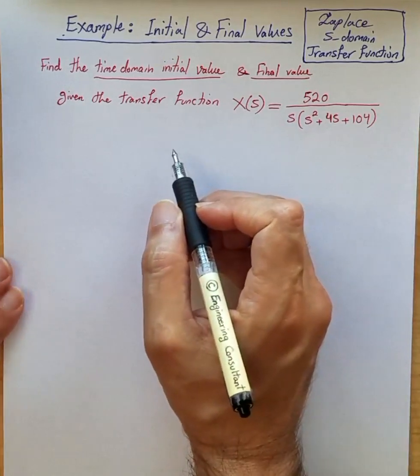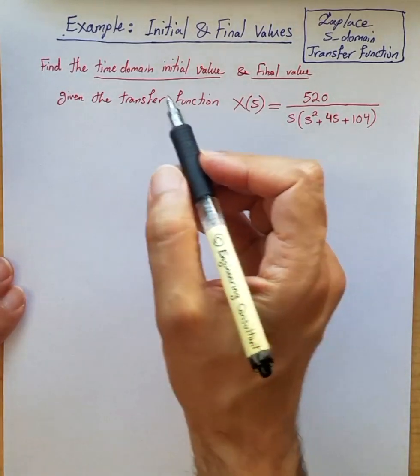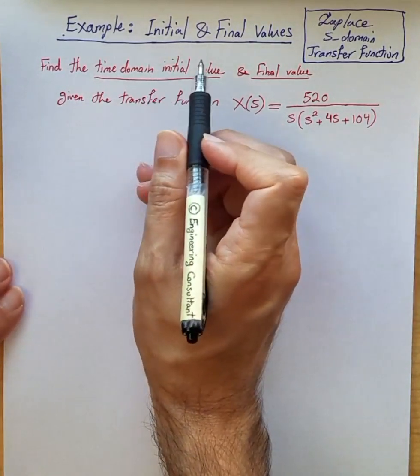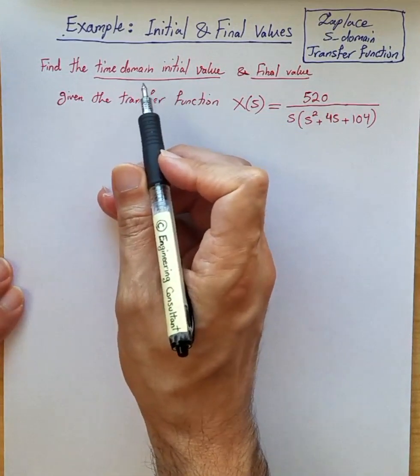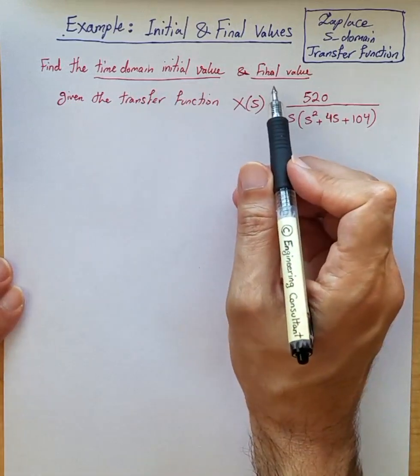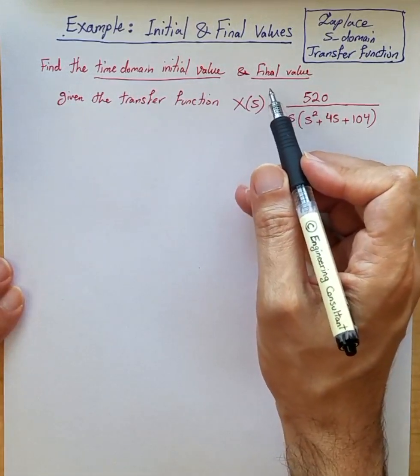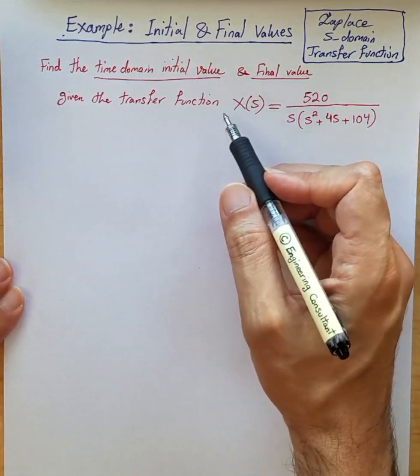In two previous videos I went over proving the initial and final value theorems and how we can find the time domain initial value and final value of a function without the need to find out the time domain function first.